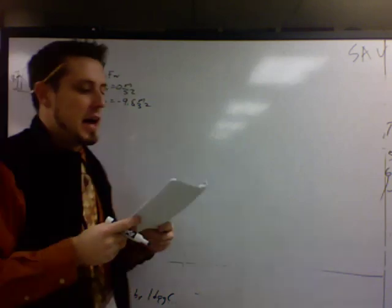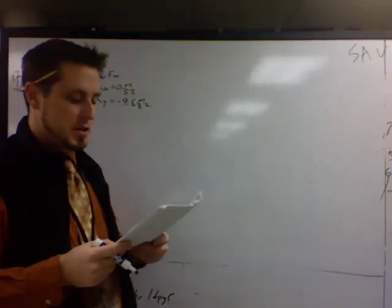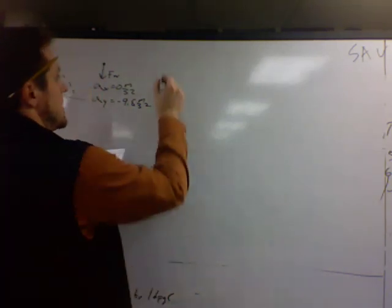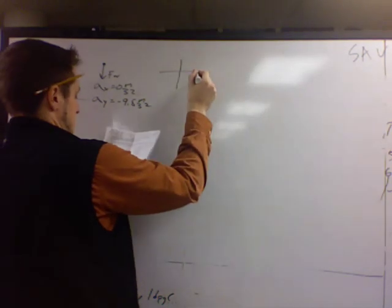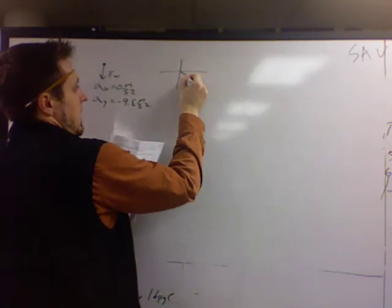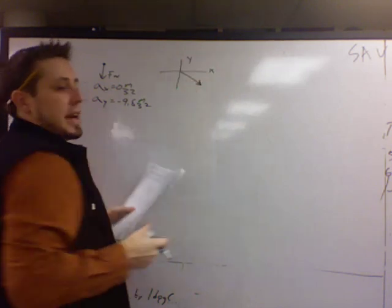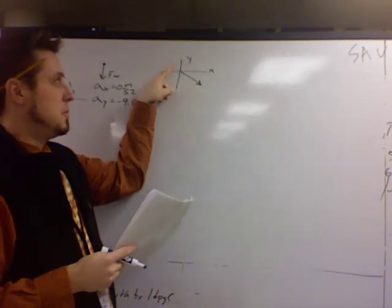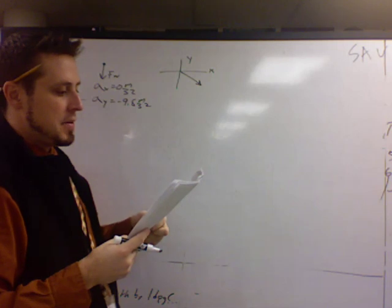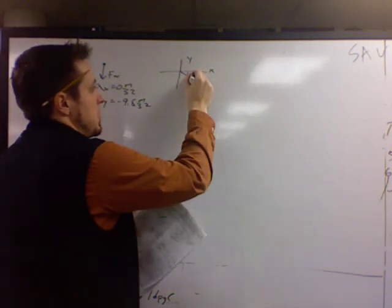Next thing that I would do is I would draw the vector for the initial velocity and figure out its components. So it's thrown down. This is my xy axis. And if you've ever got anything wrong for components, this is what I would do: put the vector on an xy axis and label the angle. 30 degrees down from the horizontal.